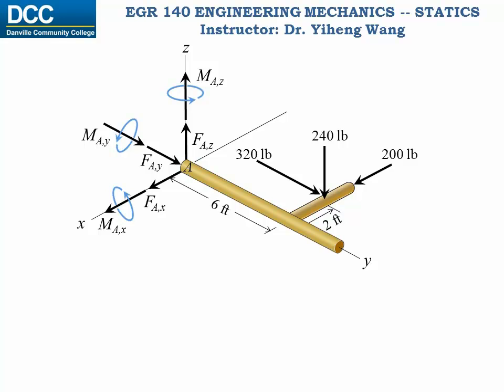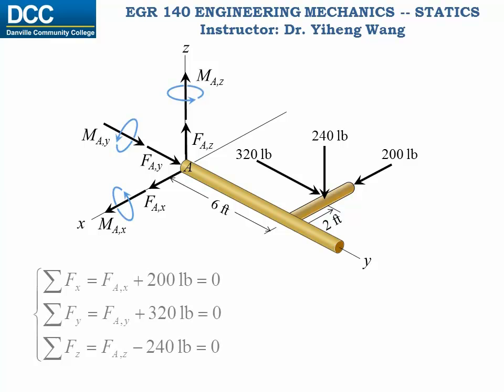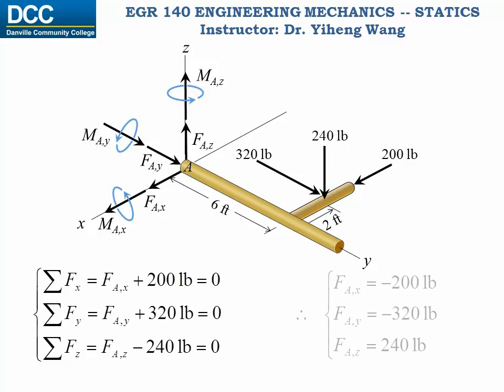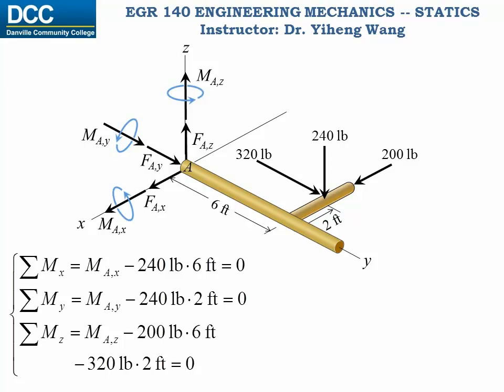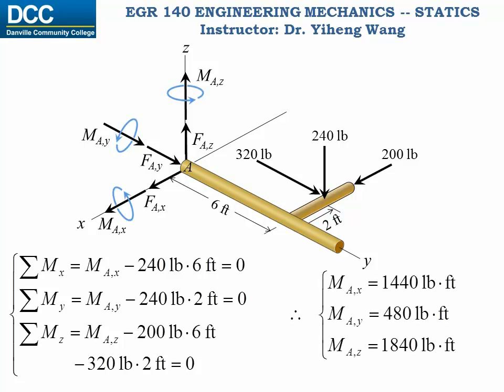At point A, we have overall six scalar unknowns: three forces along the x, y, and z axes, and three couple moments about these three axes as well. We summarize the forces in each direction and solve for the three force components, then summarize the resultant moments about each axis and solve for the three moment components. As you can see, the vector formulation and the scalar formulation yield the same results, and it is your own preference which method to choose.